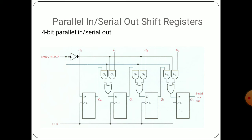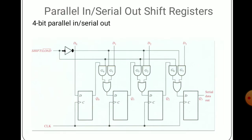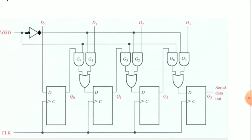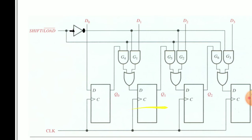After loading is over, when the shift line is enabled, G1, G2, G3 are off state and G4, G5, G6 AND gates are enabled. The OR gate is there — if G1 is off state that means 0, and G4 is on state, so 0 plus 1 is high. So Q0 is given to the next flip flop, Q0 is fitted into D. Similarly Q1 is fitted into D and Q2 is fitted into D — that is the shifting mode operation.